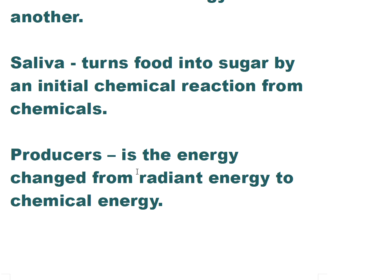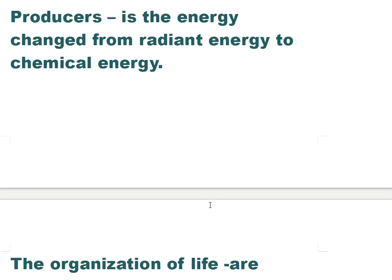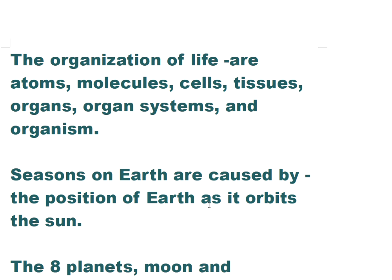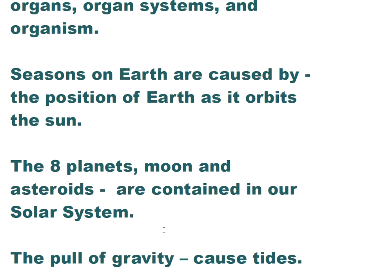Saliva turns food into sugar through an initial chemical reaction from the chemicals it contains. Producers convert energy from radiant energy to chemical energy. The organization of life goes: atoms, molecules, cells, tissues, organs, organ systems, and organism — so all life forms start with very tiny atoms.